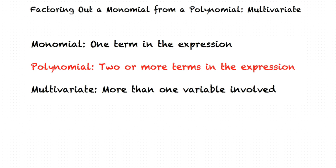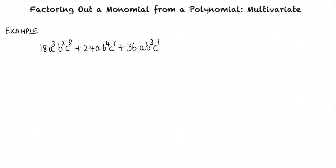So we are going to factor a multivariate polynomial, right? That is right. We are going to factor a monomial from a multivariate polynomial. Let us consider an example. We are required to factor 18a cubed b squared c to the power 8 plus 24ab to the power 4 c to the power 7 plus 36ab cubed c to the power 7.